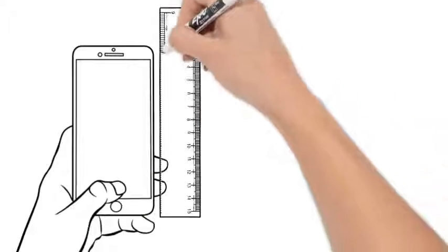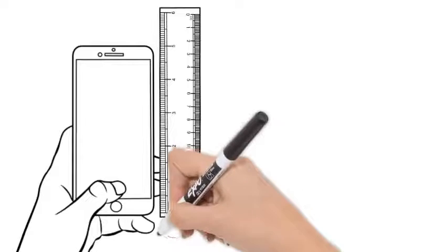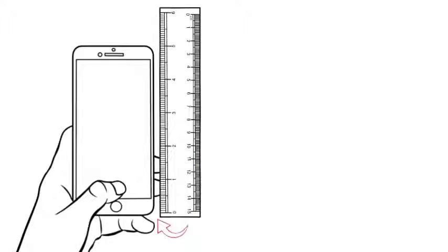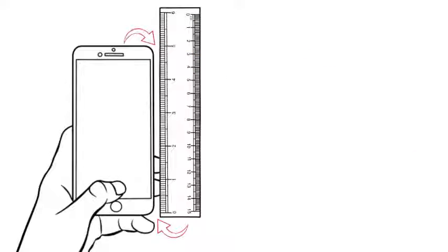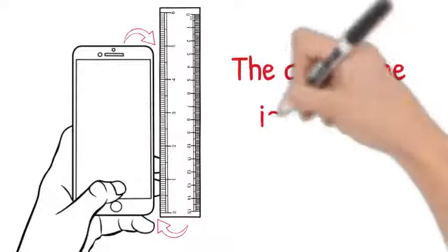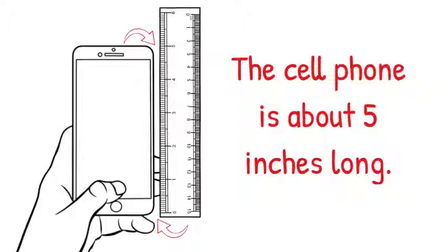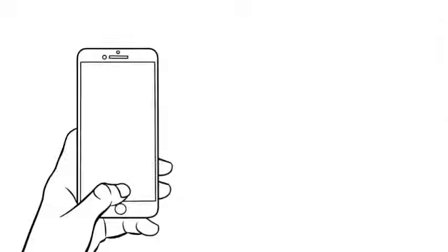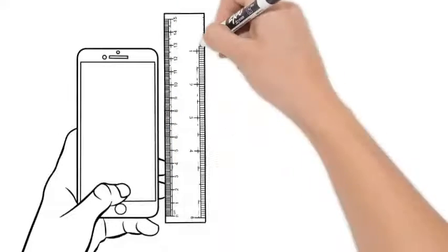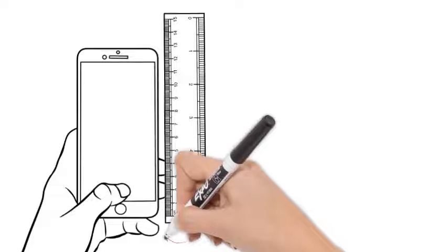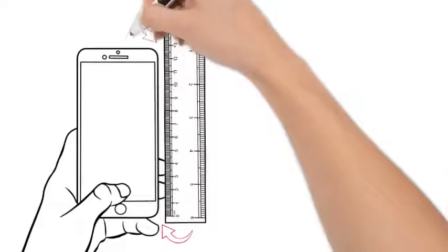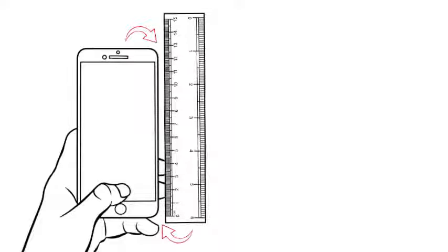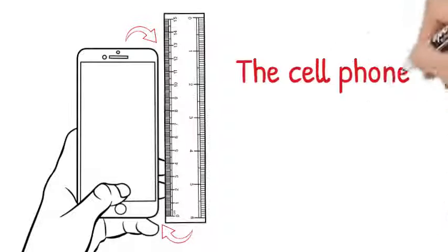Line up the zero on the ruler so your measurement is accurate. Count the inches and see where it ends. The cell phone is about five inches long. Now let's flip the ruler around to measure in centimeters. Line it up. The cell phone is about 13 centimeters long.